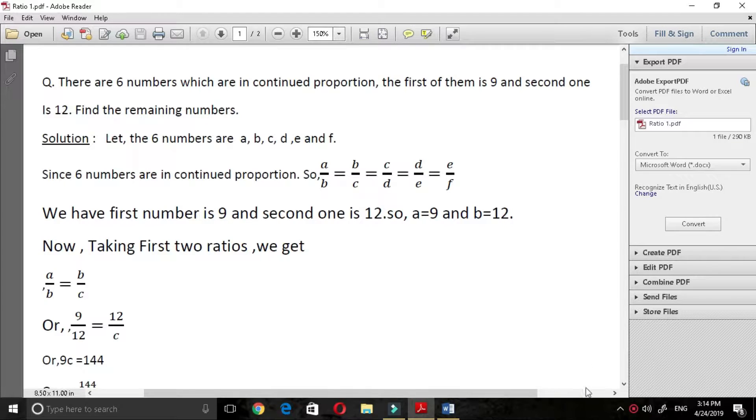Friends, today we have a question again. The question is, if there are 6 numbers which are in continued proportion, the first of them is 9 and the second one is 12, then find the remaining numbers.